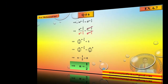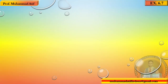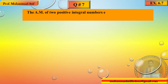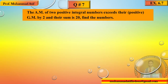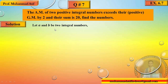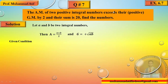Question 7: The arithmetic mean of two positive integral numbers exceeds their geometric mean by 2, and their sum is 20 — find the numbers. بہت مزے کا question ہے۔ Let a اور b دو integers ہوں۔ Arithmetic mean = (a+b)/2، geometric mean = √(ab)، اور given ہے کہ arithmetic mean = geometric mean + 2۔